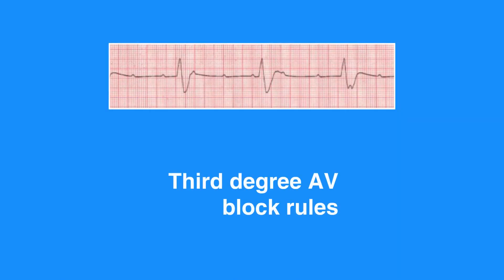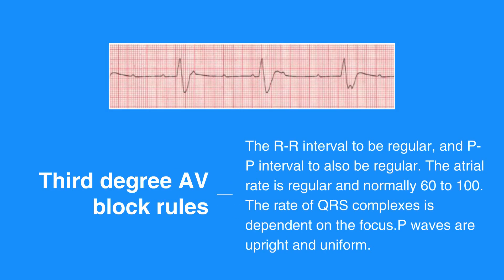Third degree AV block or complete heart block rules include RR interval to be regular and PP interval to also be regular. The atrial rate is regular and normally 60 to 100. The rate of QRS complexes is dependent on the focus: if the focus is ventricular, the rate will be 20 to 40; if the focus is junctional, the rate will be 40 to 60. P waves are upright and uniform. There is not a QRS following every P wave. The PR interval can only be measured on conducted beats and is usually constant across the strip. It may or may not be longer than a normal PR interval of 0.12 seconds. The QRS complex interval may be normal but is more likely to be prolonged.